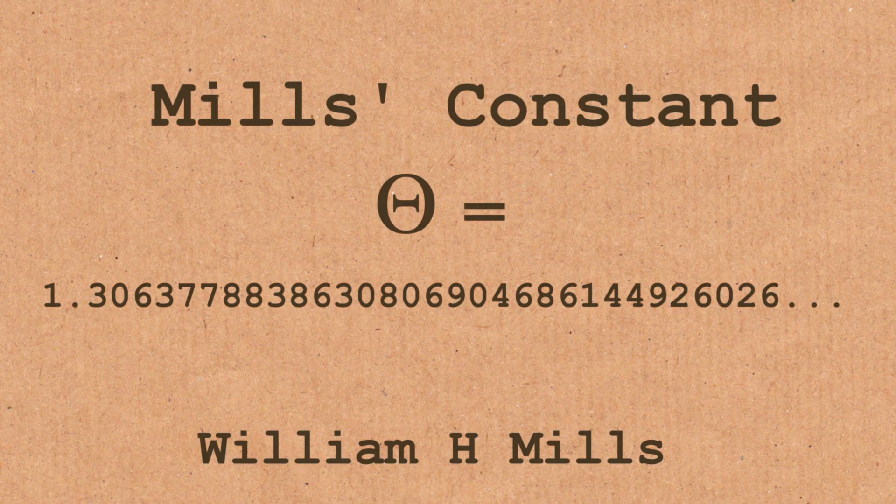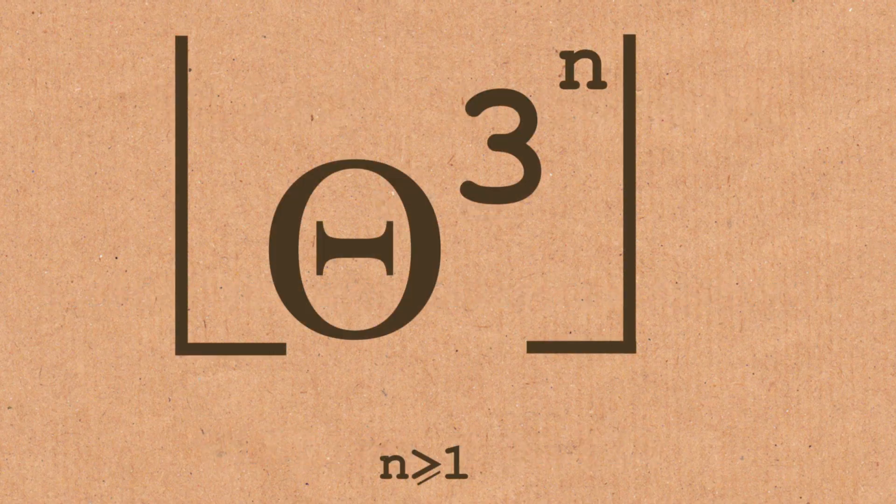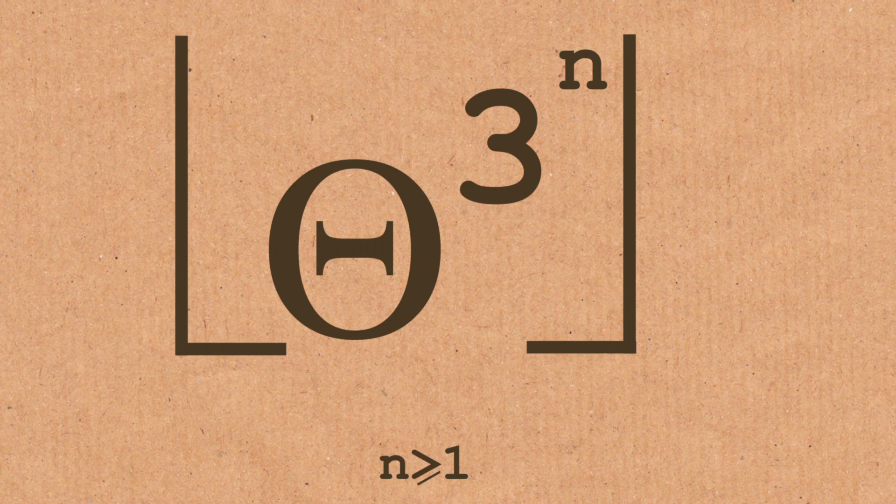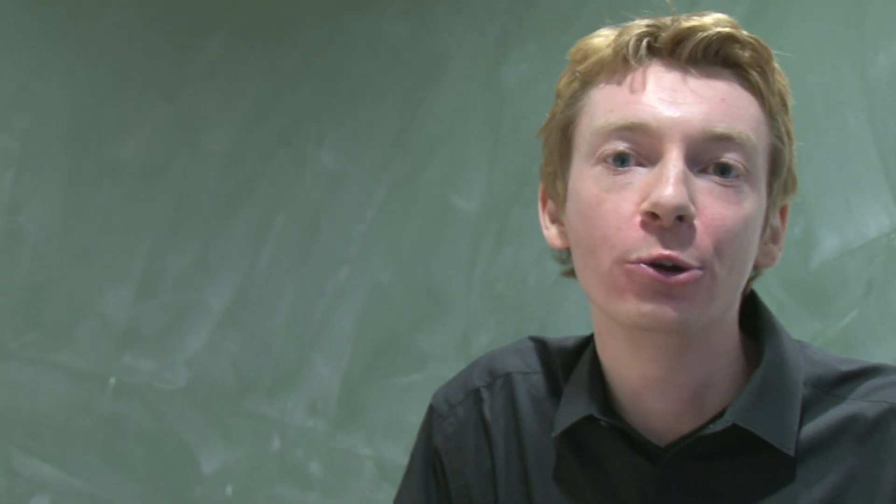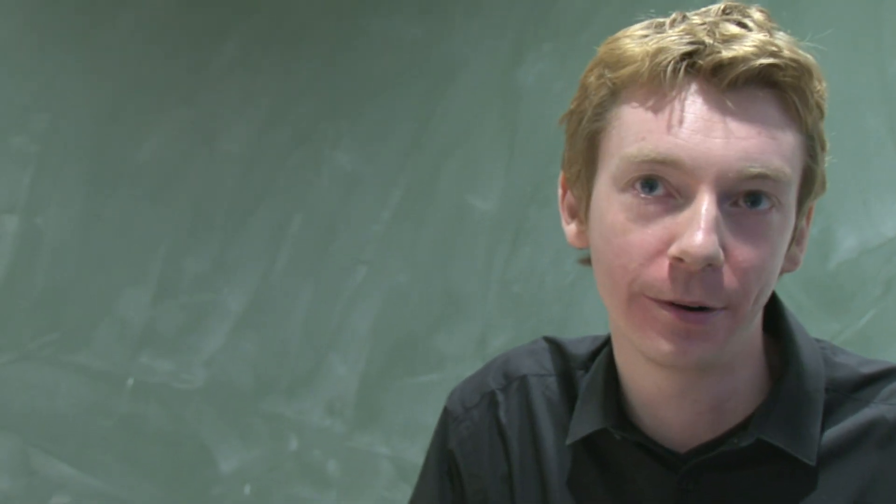So you might think then, well, so what's the big deal? We've got a formula to find guaranteed primes. How amazing is that? And the problem is, did you notice how big the powers were getting? The powers very quickly become so huge that even computers can't deal with the problem.